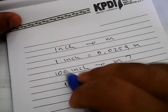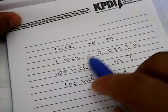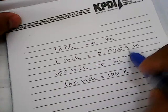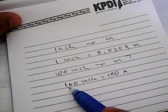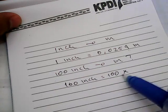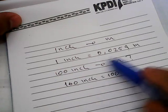One inch is equal to 1 multiplied by this number. So, 100 inch is equal to 100 multiplied with this number.